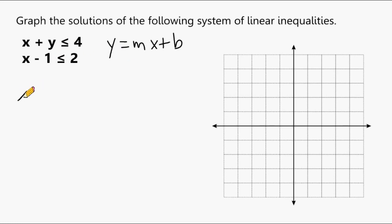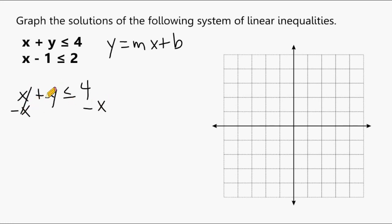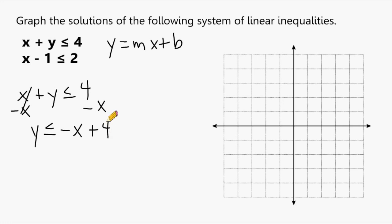Let's take our first inequality and convert it to slope-intercept form by isolating the y variable. We take the positive x and move it to the right-hand side as negative x, so the x terms cancel out. Isolating y, we bring down the inequality symbol and write the x term first: negative x, then plus 4, which is our y-intercept.